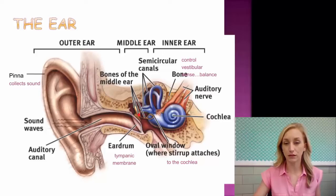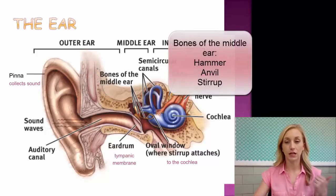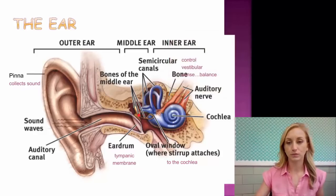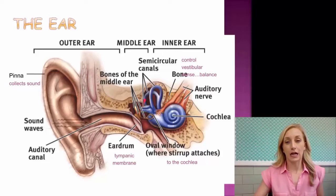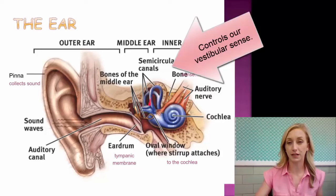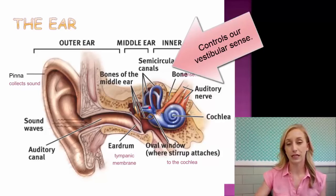The middle ear contains the bones of the middle ear: the hammer, the stirrup, and the anvil. You should write those down — hammer, stirrup, and anvil (A-N-V-I-L). Then you have the semicircular canals. Make sure you write this down: the semicircular canals and the inner ear control our vestibular sense.